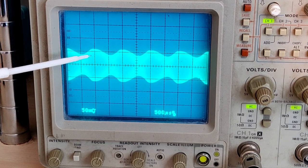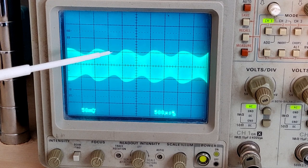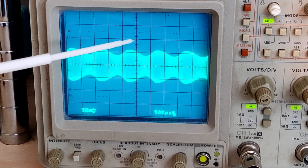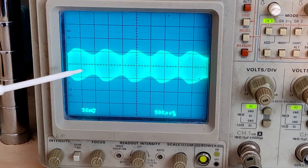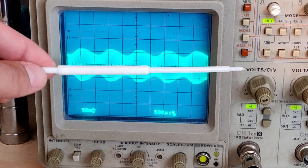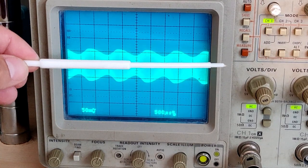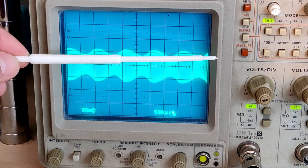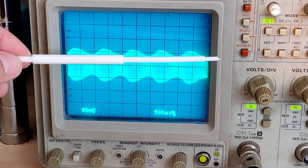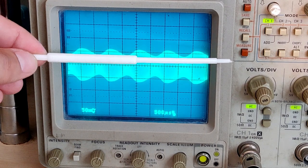But basically, this top edge here is going to be your audio frequency. And that's actually what a detector is doing, is it's going to chop this in half. So you're only going to see from here up. And then with the capacitor smoothing, you're then only going to see this audio wave right here. And that's your 400 hertz tone.